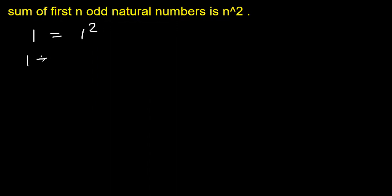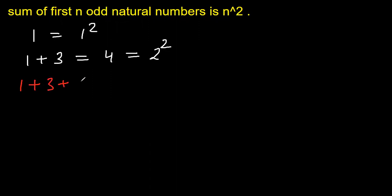What if we take the first two odd natural numbers? That is 1 and 3. So 1 plus 3 is 4, and we are taking two numbers, and this can be written as 2 squared. Now let's take the first three odd natural numbers: 1 plus 3 plus 5, and we get 9, which can be written as 3 squared.